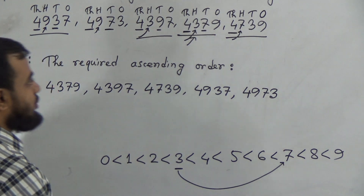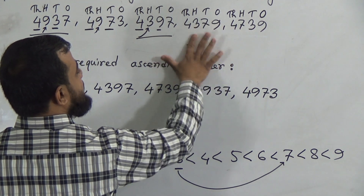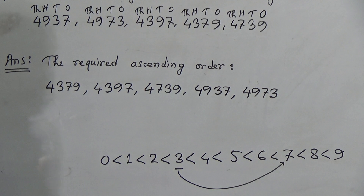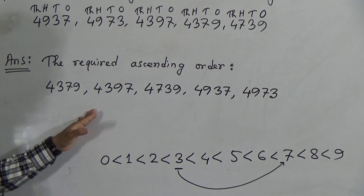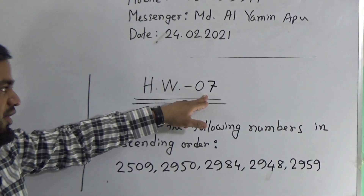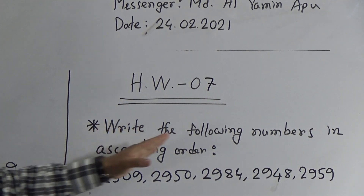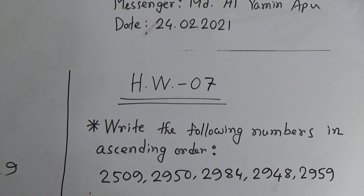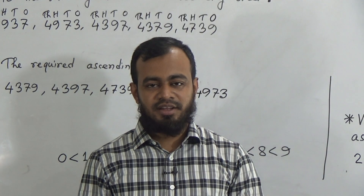I think, my students, you have understood how to solve this. This is the ascending order — from smaller to greater — and we have arranged it. You have a homework on this, homework number 7. Please mention the homework number in your HW copy, write the question, then write the answer, write the required ascending order, give a column, and arrange the numbers from smaller to greater. You should submit your homework every Saturday. See you again, inshallah. Allah Hafiz.